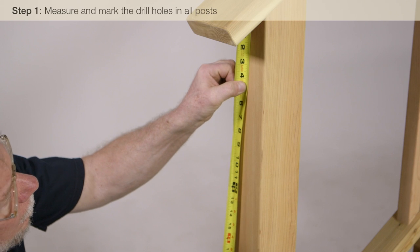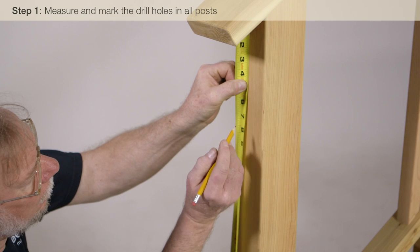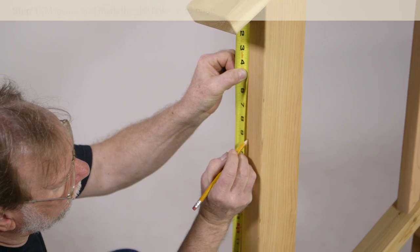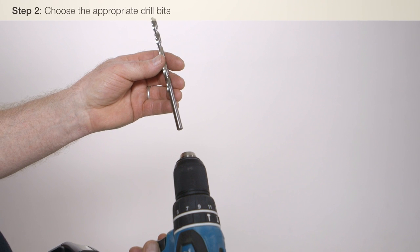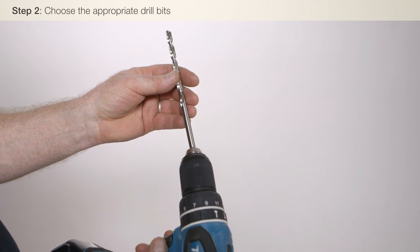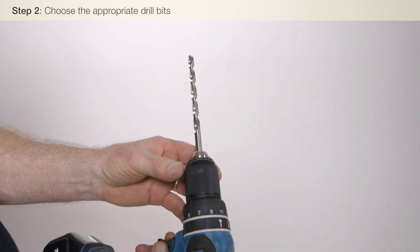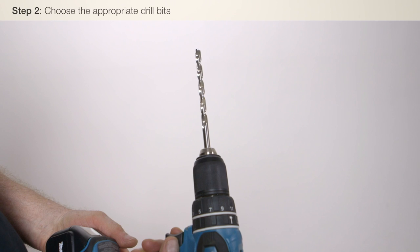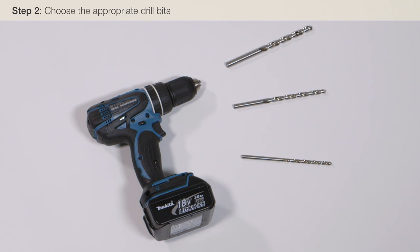Using the measurement we took when calculating the number of assemblies, we will now mark all drill holes on all posts. Drill bit sizes vary based on the diameter of cable and the type of fittings you are using. In our installation, we are using 1/8 inch cable with standard quick connect and threaded terminal fittings. We will need three different drill bit sizes.